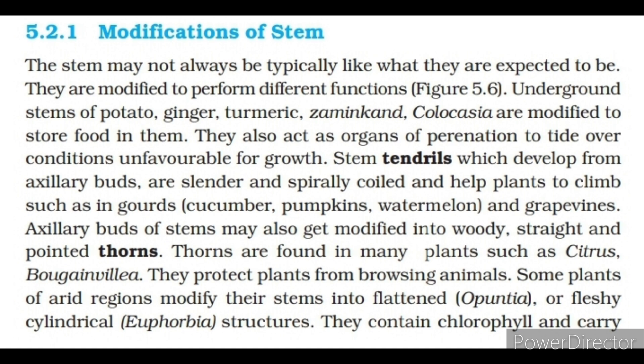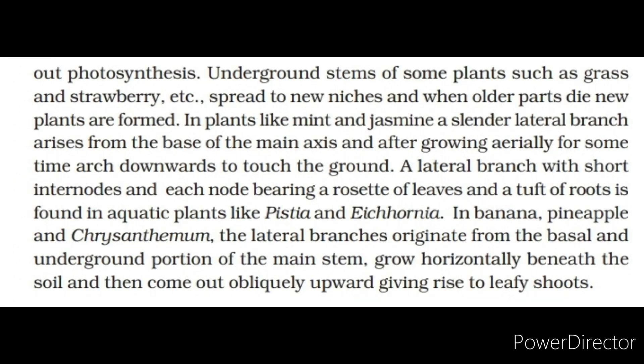Thorns protect plants from browsing animals. Some plants of arid regions modify their stems into flattened (Opuntia) or fleshy cylindrical (Euphorbia) structures. They contain chlorophyll and carry out photosynthesis. Underground stems of some plants such as grass and strawberry spread to new niches, and when older parts die, new plants are formed. In plants like mint and jasmine, a slender lateral branch arises from the base of the main axis and after growing aerially for some time arches downwards to touch the ground. A lateral branch with short internodes and each node bearing a rosette of leaves and a tuft of roots is found in aquatic plants like Pistia and Eichhornia. In banana, pineapple and chrysanthemum, the lateral branches originate from the basal and underground portion of the main stem, grow horizontally beneath the soil and then come out obliquely upward giving rise to leafy shoots.